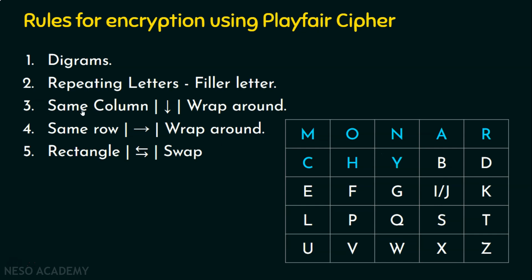In a digram we have two alphabets, which may be in the same row, same column, or different row and column. If the digrams are in the same column, we move down to generate the ciphertext. If we encounter the last position, we wrap around. For example, if we are at V at the bottom of the table, wrapping around gives us O. I will explain this elaborately in the example.